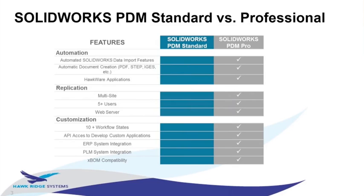Automatic document creation — PDF files and other file types — is available in SolidWorks PDM Professional but not in Standard. That includes the upcoming Office PDF feature and DWG and DXF conversion tasks. Additionally, there's a suite of Hawkware applications that can automate PDM tasks available in EPDM and PDM Professional, but PDM Standard has no access to the API (application programming interface) for custom code.